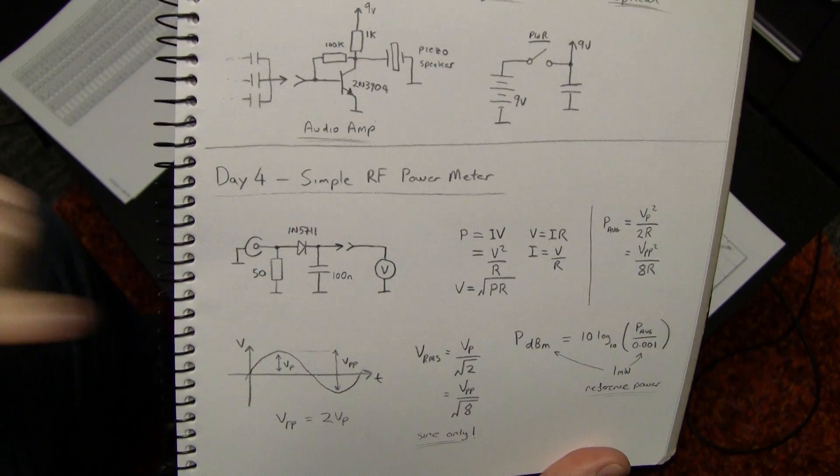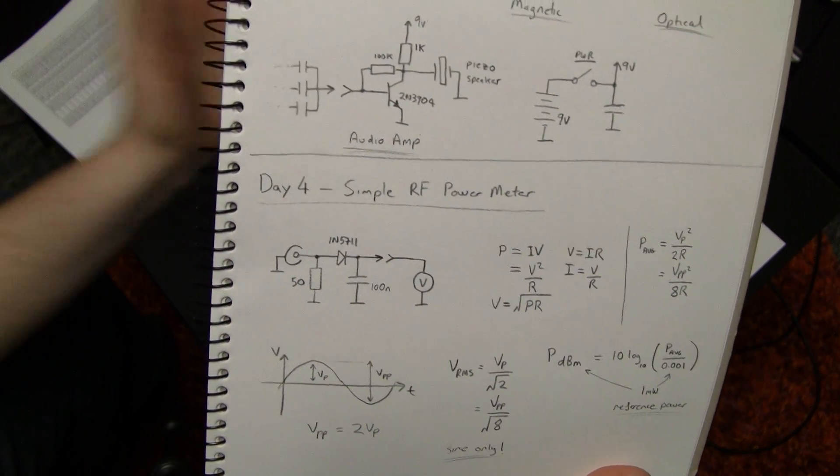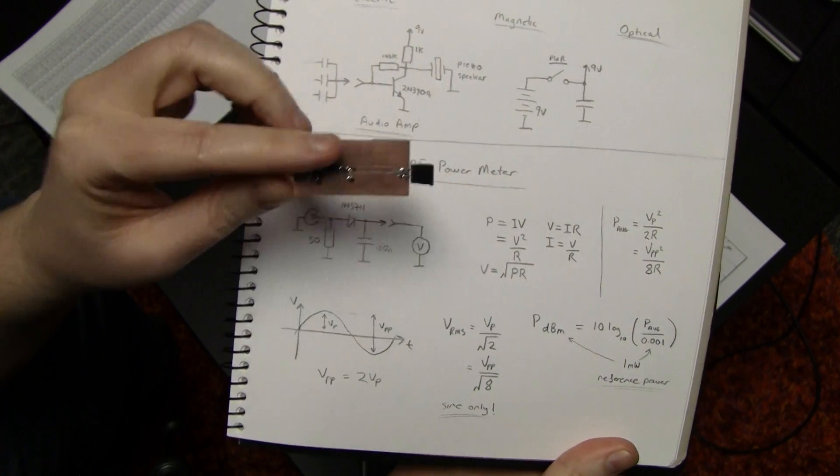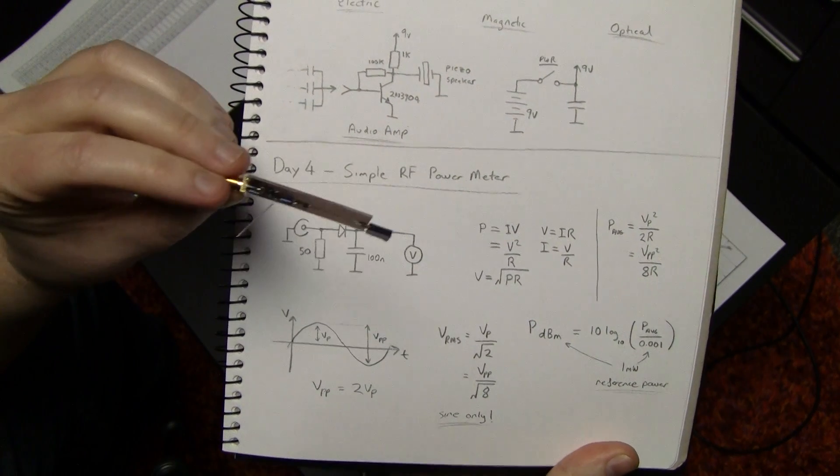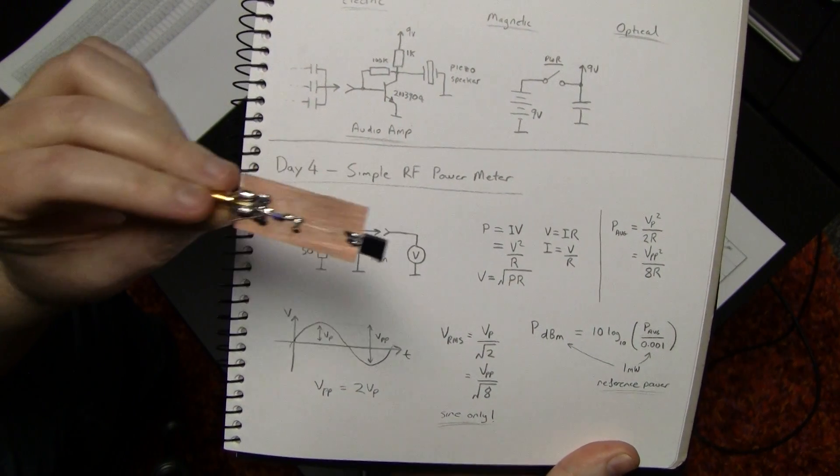The circuit today, you can knock it together in like five minutes, you should probably, every RF person should have one. It's kind of like the most fundamental thing that you should have in your RF test kit, is a way to measure RF power.